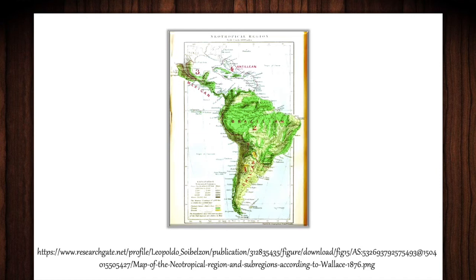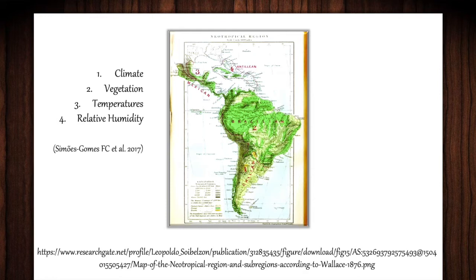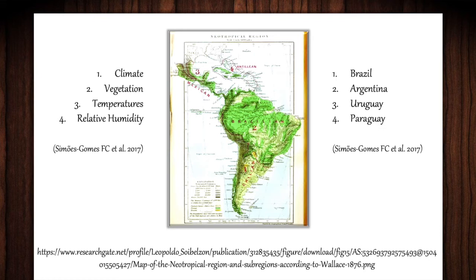These ants can be found in the neotropical regions of Central and South America, inhabiting places with climates, vegetation, temperatures, and relative humidity that best suit the cultivation of the Lepiotaceae fungus, such as the rainforests of Brazil, Argentina, Uruguay, and Paraguay. The symbiotic dependence on this family of fungus began more than 50 million years ago, as studies have shown.